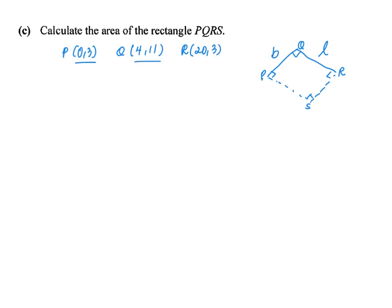To define length PQ will be square root, something like Pythagoras theorem, something square plus something square, and inside there will be subtraction. So it will be (0 minus 4) squared, and (3 minus 11) squared. That gives us a simplified form: square root of 4 squared plus 8 squared, that will be square root of 80.